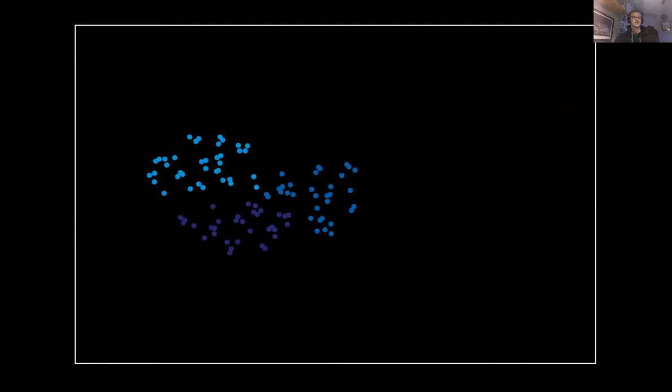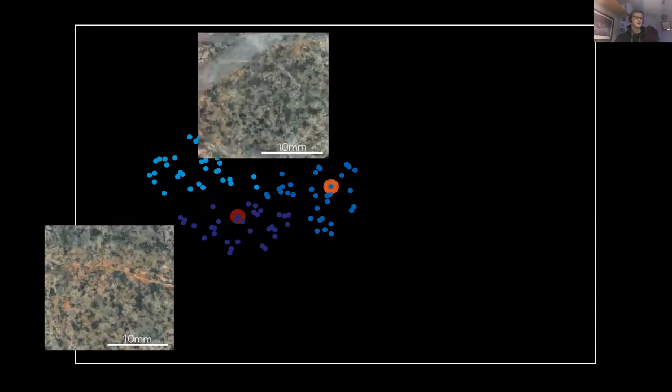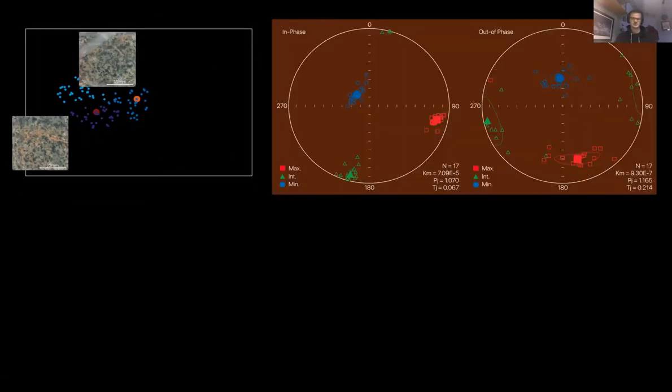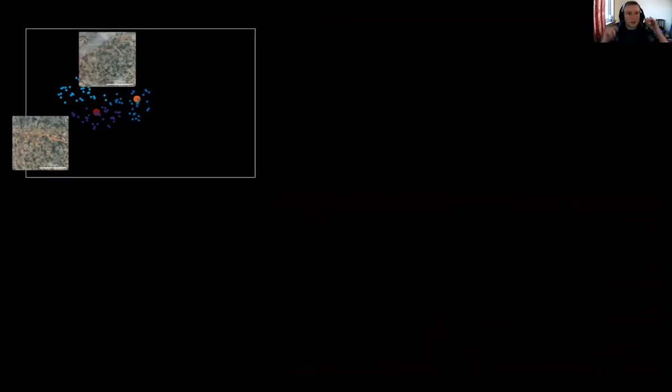If we go back to the full graph and focus on this blue group, which would fall into the traditional phyllic alteration zone, you can see these two data points that I've got images for. We can have distinct AMS results as well, where this orange data point has distinct IP and OP AMS results. However, in this red group below, you don't have distinct IP and OP AMS results.